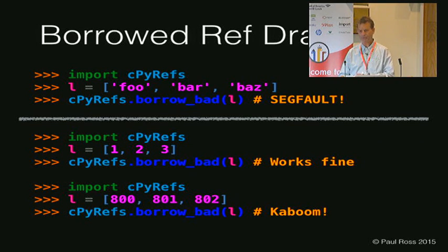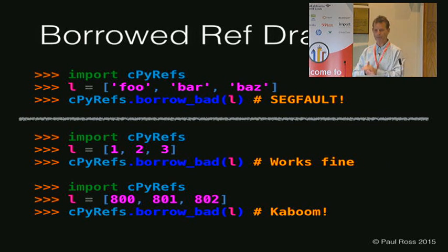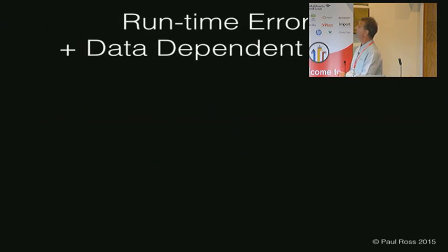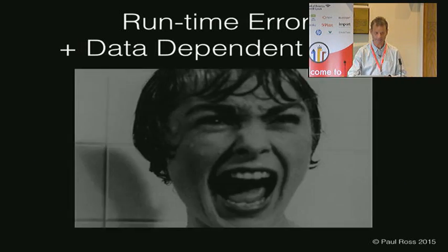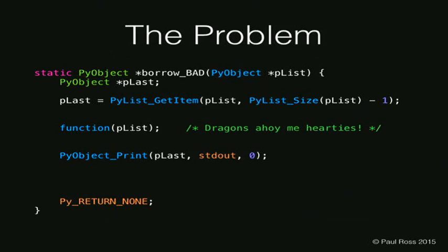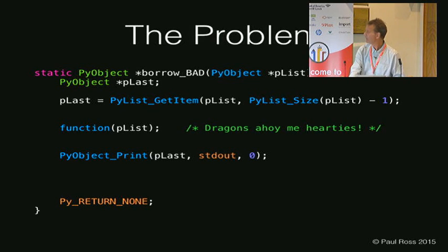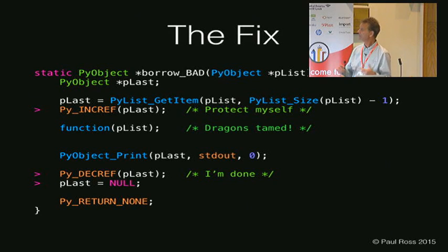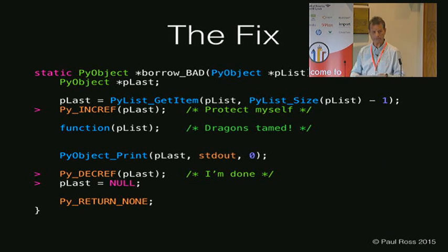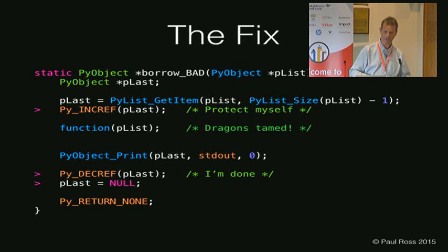These are runtime errors and data-dependent errors — really scary stuff. The fix is easy: because p_last is a borrowed reference, I have to state an interest in it by incrementing the reference count. That protects me so that function, if it tries to delete the last one, only decrements the ref count and doesn't fully delete it. Then when I've lost interest, once I've printed out, I decref it. Good programming practice would also be to set p_last to null just to stop you accidentally trying to print it out hundreds of lines below.